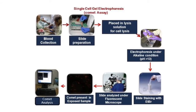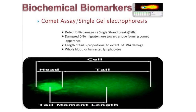Genotoxicity can be determined by single cell gel electrophoresis, also called the comet assay. A blood sample is collected from the patient, prepared in layers using agarose, and undergoes electrophoresis, after which it is observed under a microscope. The intact nucleus is called the head and the DNA fragments form the tail. Damaged DNA migrates toward the anode forming a comet appearance, and the length of the tail is proportional to the extent of DNA damage. Whole blood or harvested lymphocytes can be used.